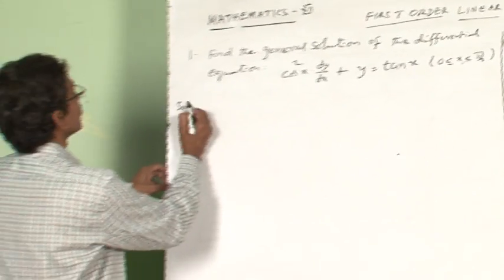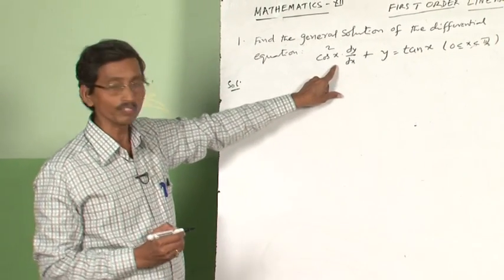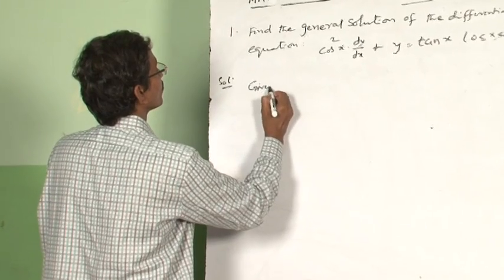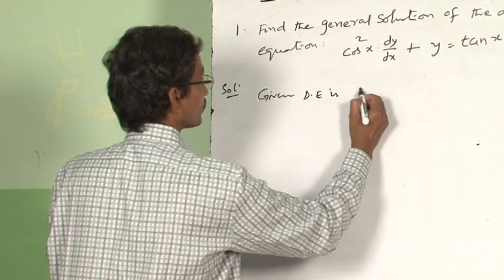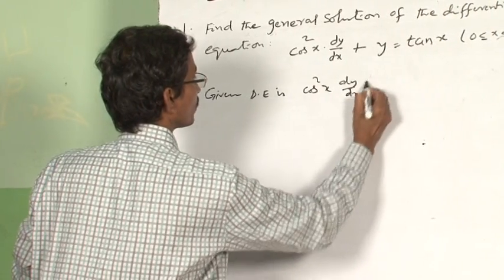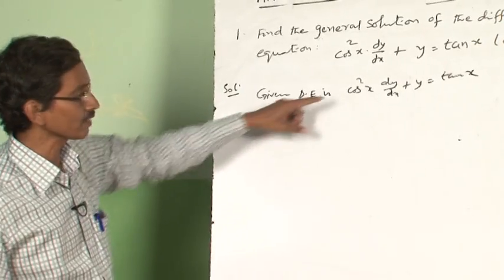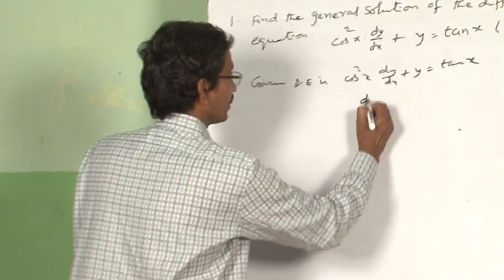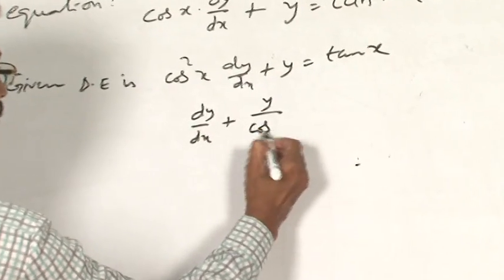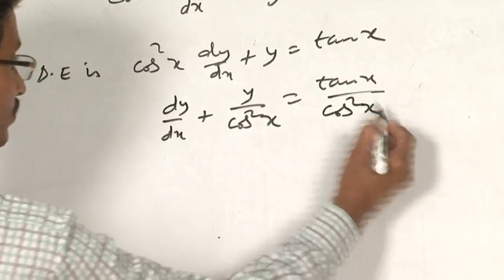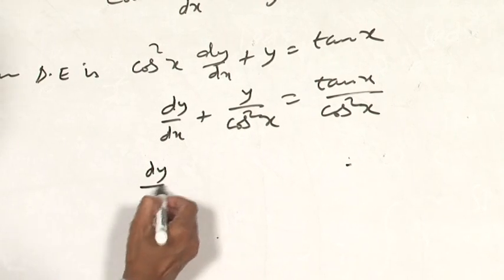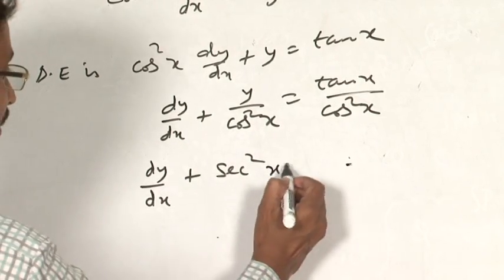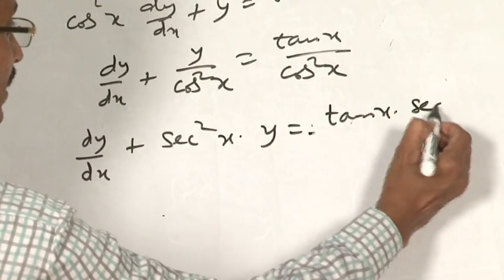For the first question, the given differential equation is of the form dy by dx plus P y equals Q. To bring it into standard form, I divide throughout by cos squared x. Then: dy by dx plus y divided by cos squared x equals tan x divided by cos squared x. I can simplify this as: dy by dx plus secant squared x times y equals tan x times secant squared x.